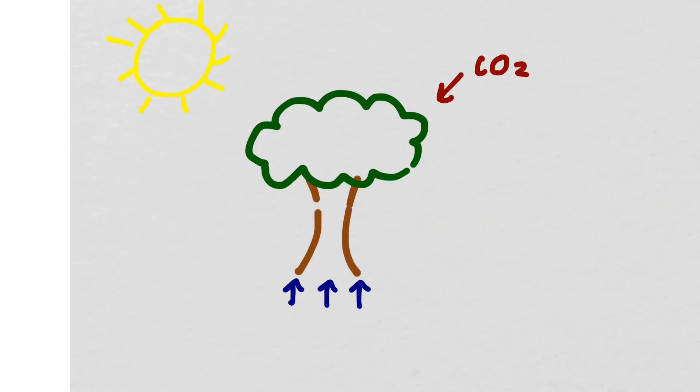The tree also influences its environment in turn because it provides things like oxygen, which is a byproduct of photosynthesis. It also does things like provide habitats for other organisms and provides shade.